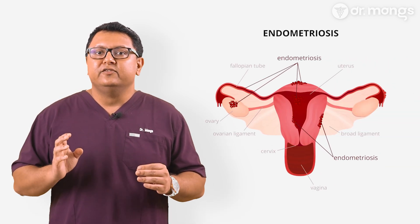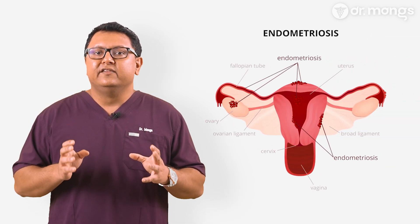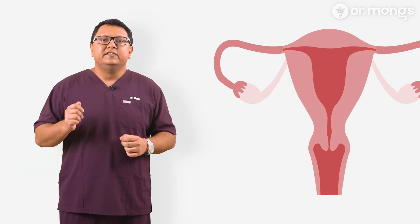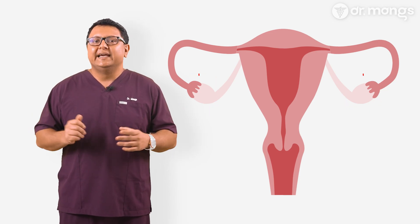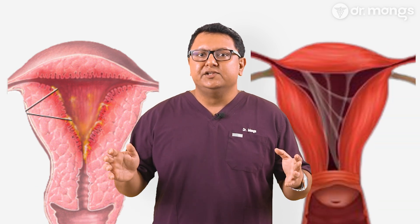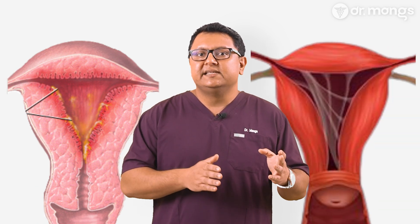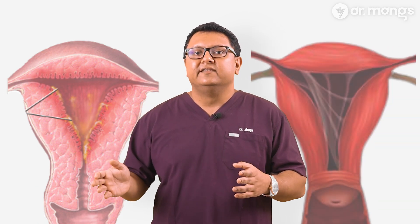Endometriosis is a condition where tissue similar to the lining of the uterus grows outside of it, often affecting the ovaries, fallopian tubes, and can grow virtually anywhere else in the body. This tissue can cause inflammation, scarring, and adhesions, leading to a range of symptoms that can complicate fertility. If you're interested in a more detailed explanation of endometriosis itself, including its causes, symptoms, and general treatment options, I encourage you to watch our dedicated video on this topic.